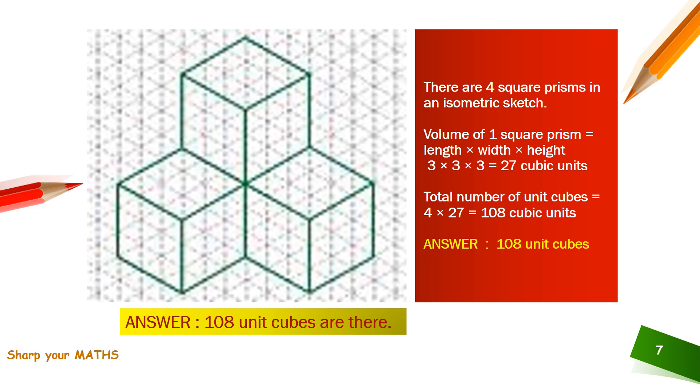The 4 square prisms each has 27 unit cubes. So total 108 unit cubes are there in this sketch.